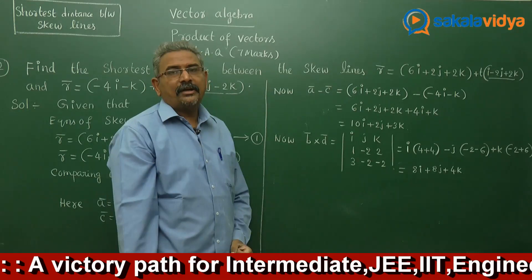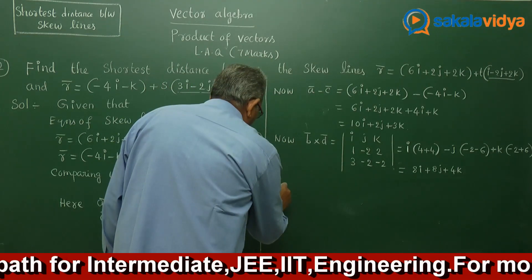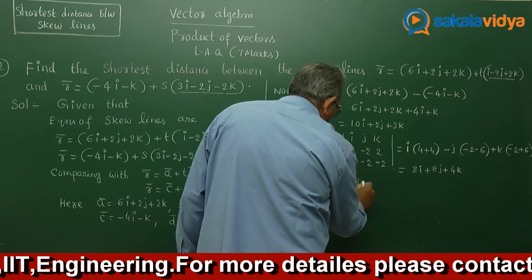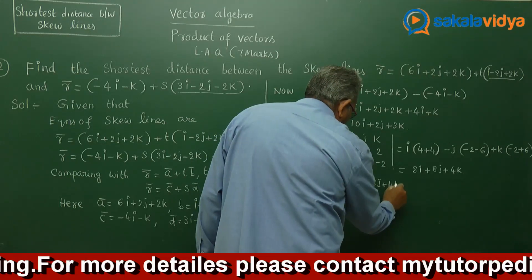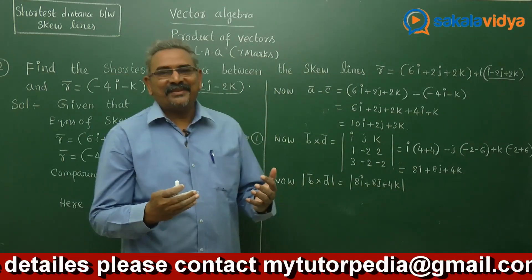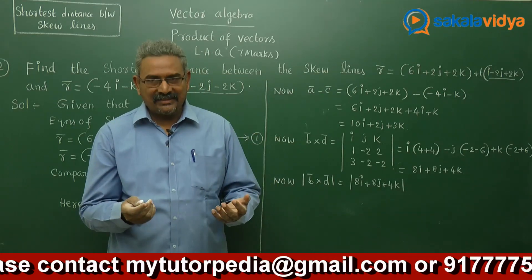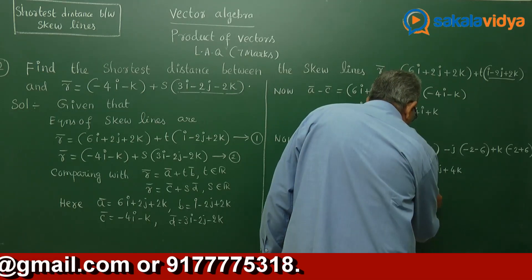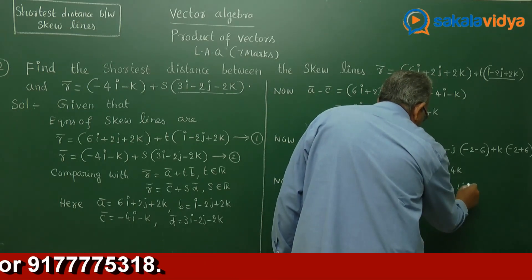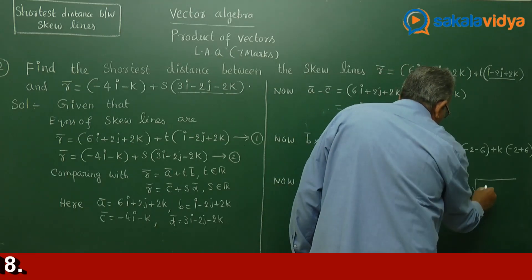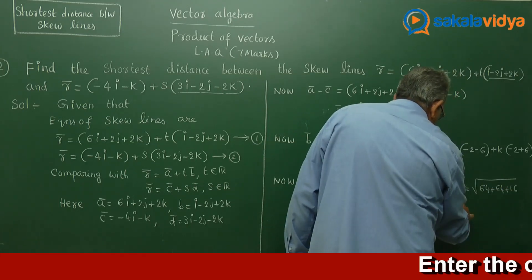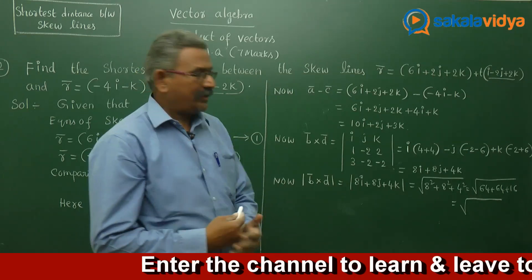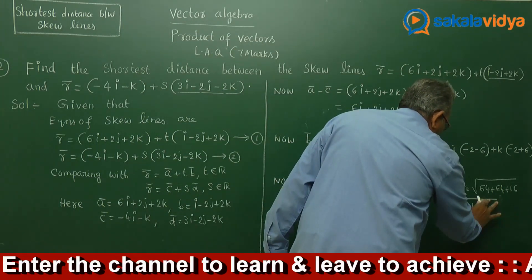Now let us find the modulus of b cross d. Modulus of b cross d equals modulus of 8i plus 8j plus 4k. The modulus of a vector a1·i plus b1·j plus c1·k is root over (a1² plus b1² plus c1²). So here: root over (8² plus 8² plus 4²) = root over (64 plus 64 plus 16) = root over 144 = 12.